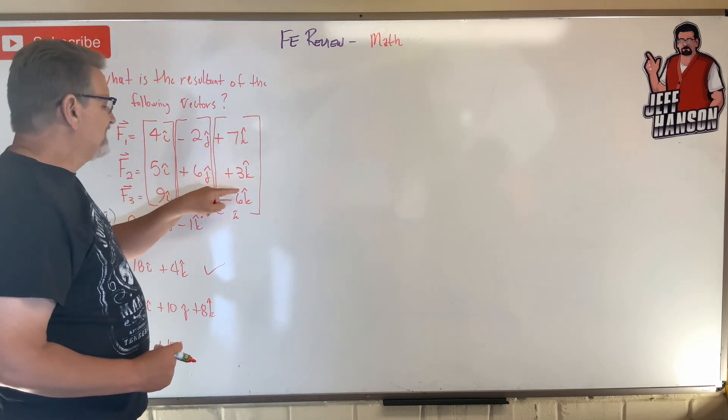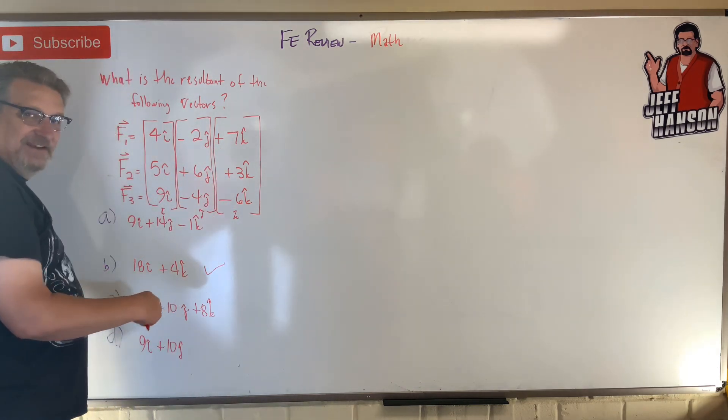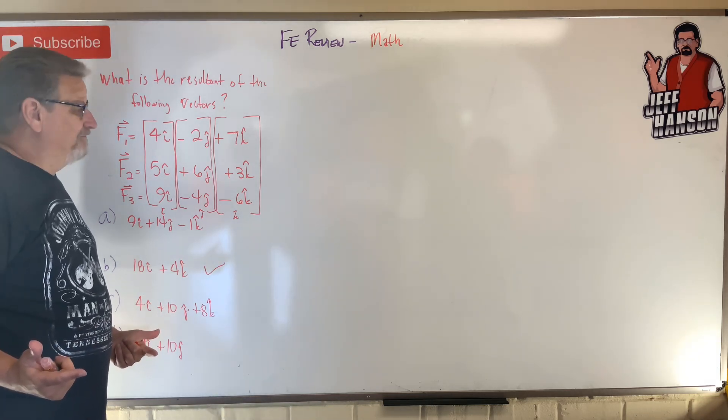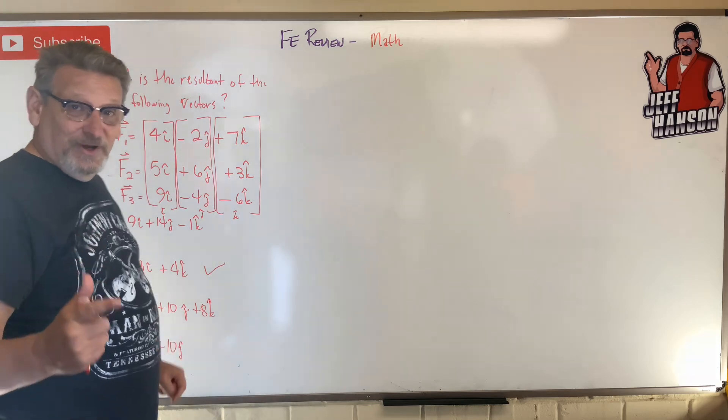7 plus 3 is 10, minus 6 is 4. That's the ticket right there. Okay, that's how you add vectors together. That's what resultant means. Let's do another one, here we go.